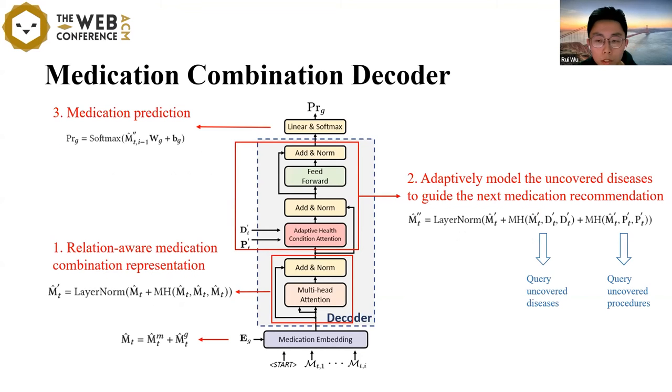The last module in basic model is the medication combination decoder. This module recommends medication one by one for the current visit. First, we use the original embedding and the relation-aware embedding to obtain the relation-aware medication representation. Here, a multi-head self-attention mechanism is also used to capture the interactions among the recommended medications. Intuitively, the medication recommendation task aims to generate drugs that can cover all diseases of the patient. The patient's disease and procedural representation plays an auxiliary role during the decoding process. To this end, in the second step, we align the patient's health conditions to adaptively model the uncovered diseases and procedures to guide the next medication recommendation. Finally, we use an MLP layer to predict the next medication.